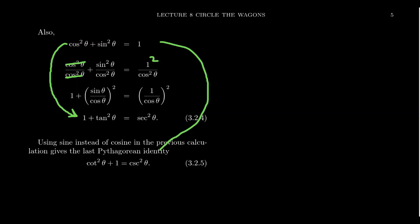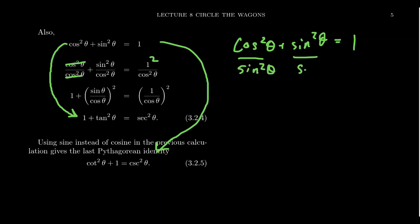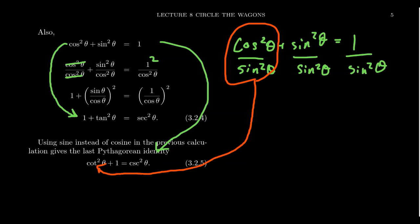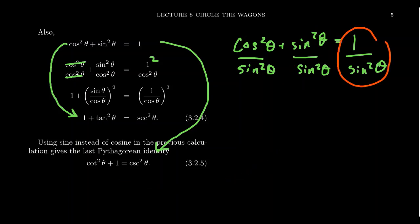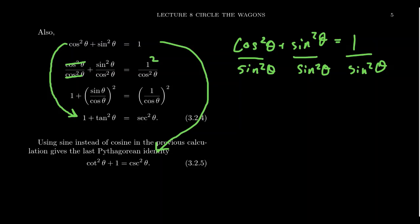We can do it again to get another equation: cotangent squared plus 1 equals cosecant squared. Start with cosine squared theta plus sine squared theta equals 1, but this time divide both sides by sine squared. You get cosine squared over sine squared, plus sine squared over sine squared, equals 1 over sine squared. Cosine over sine is cotangent, so you get cotangent squared. Sine squared over sine squared simplifies to 1. And 1 over sine squared, since 1 over sine is cosecant, gives cosecant squared. So we get these other Pythagorean identities all based on the standard equation cosine squared plus sine squared equals 1.